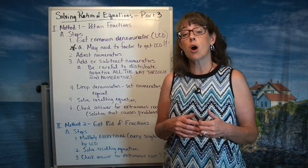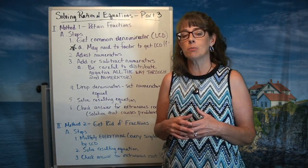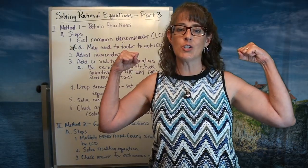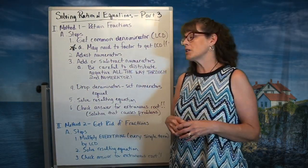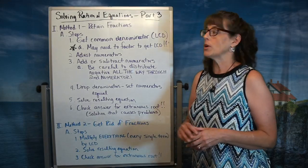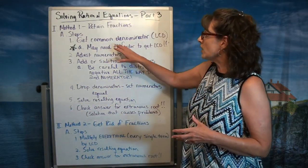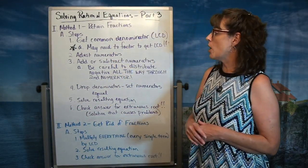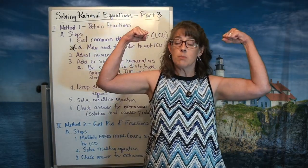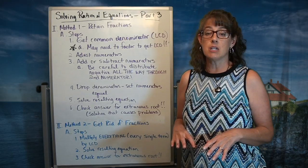Those denominators will not have one single term in them, and those numerators probably won't either. More than that, to find that common denominator, it's going to be a little bit of a stretch. We're going to have to put a little more muscle into finding that common denominator. We still have these two methods to work with. The first method says we're going to retain the fractions and get that common denominator — you might need to factor to get your LCD.